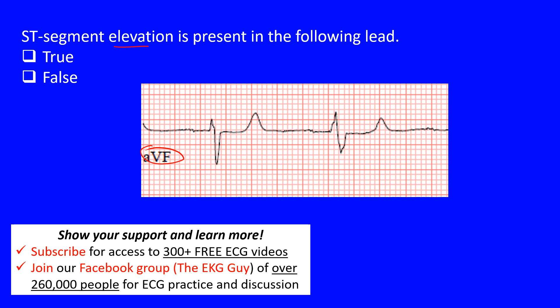Let's quickly review the cardiac complex. We have a P wave, a QRS complex, and a T wave. Within the QRS complex we can identify the R wave and the S wave, followed by the T wave.